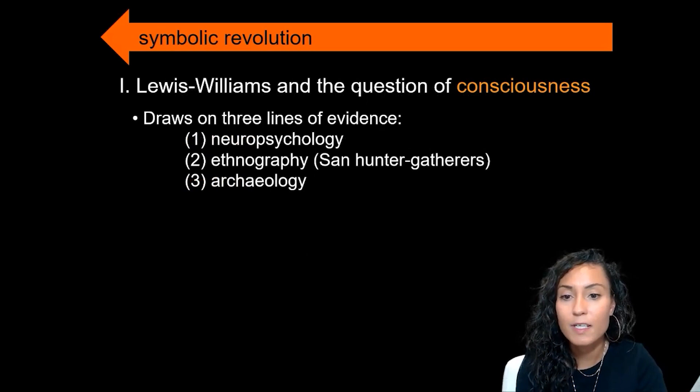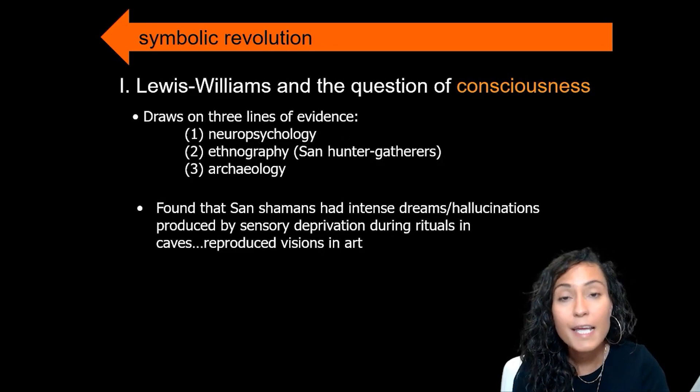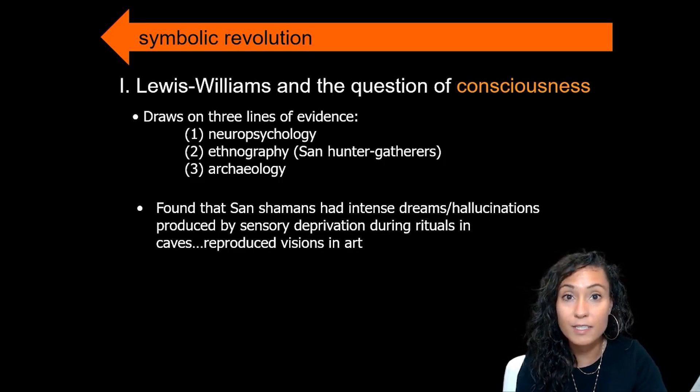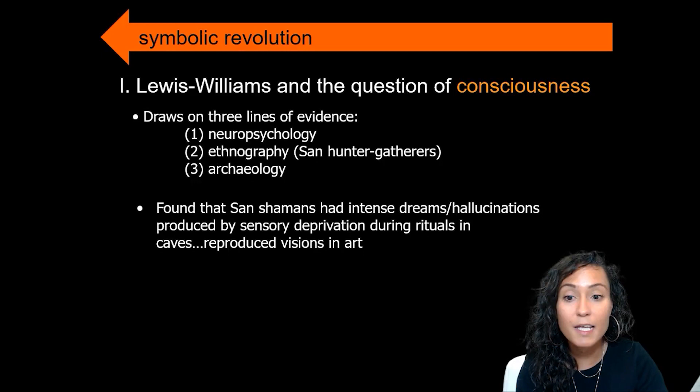In developing an alternative to this conventional model, Lewis-Williams draws on three lines of evidence: neuropsychological, ethnography among San hunter-gatherers in Africa, and the archaeological record. In his ethnographic work with San hunter-gatherers, Lewis-Williams found that San shamans had intense dreams and hallucinations produced by sensory deprivation during rituals in caves, and that during these rituals they reproduced their visions in art.